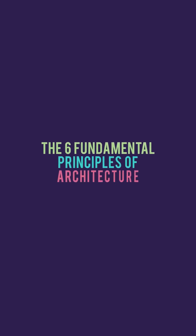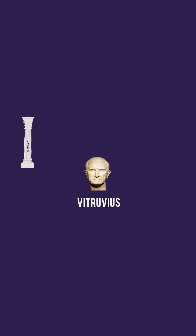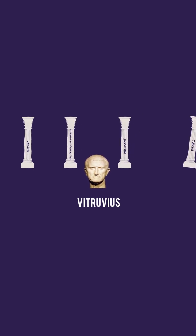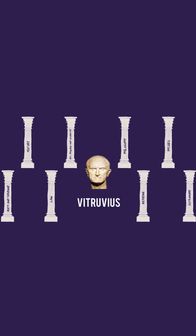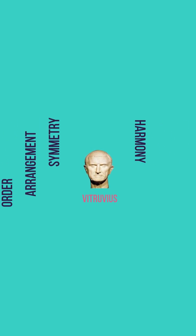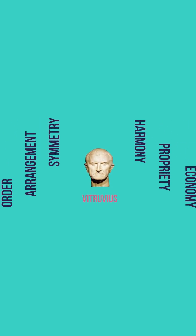After laying out the path for being a successful architect according to Vitruvius in our previous videos, we will go through his ideas on the fundamental principles of architecture, as pointed out in his writings. Vitruvius believed that architecture depends on six principles, each with its own weight and value on the projects.